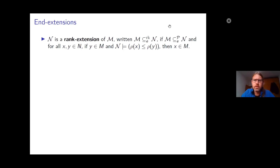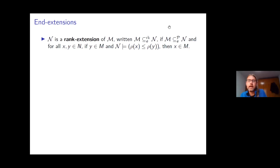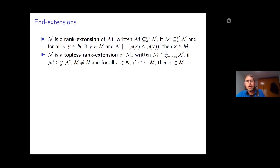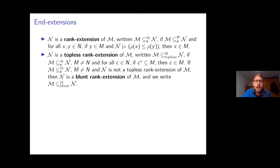There is one additional notion: rank extension. N is a rank extension of M if N is a power set preserving end extension of M and all new things added in N have rank strictly greater than everything in M. We can define topless rank extension and blunt rank extension analogously to the power set preserving case.